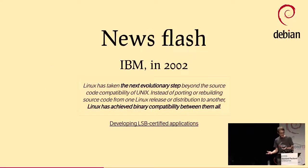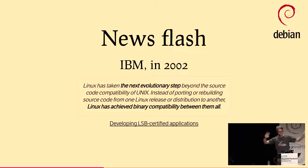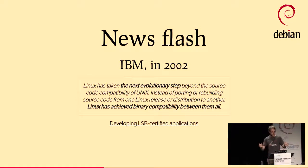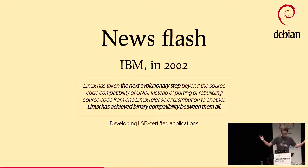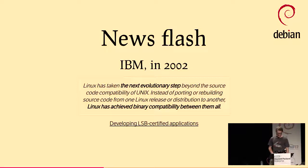And apparently there was hope. I found this article from IBM in 2002 — newsflash: 'The problem is solved. Linux has taken the next evolutionary step beyond source code compatibility of Unix. Linux has achieved binary compatibility between them all.' So we could have just stopped in 2002, right?